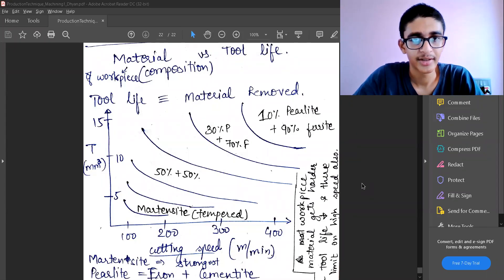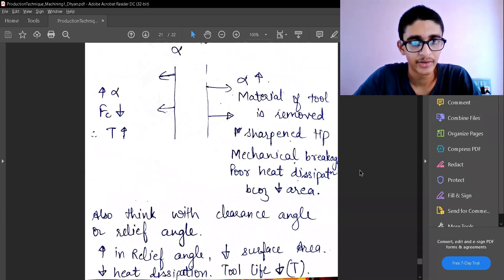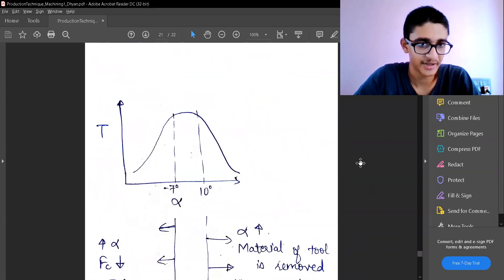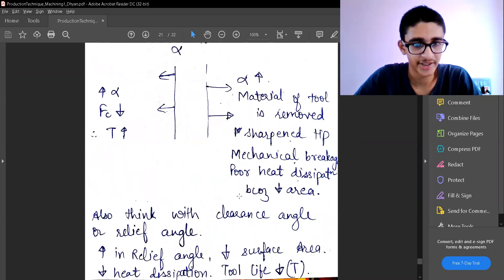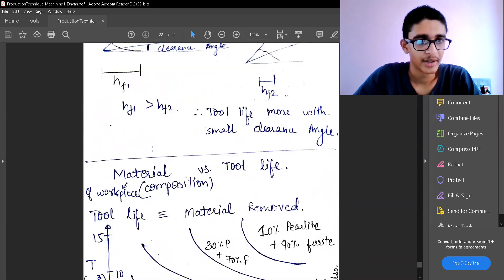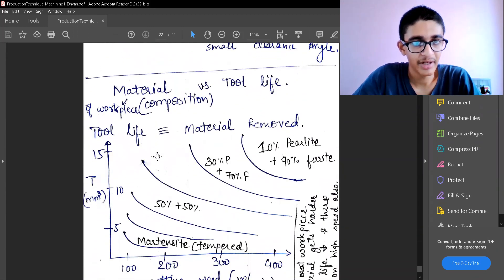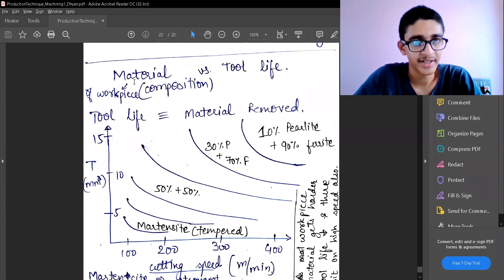Earlier we have seen the tool life was a function of the velocity, feed rate, width of the chip or the machining which is done. It was a function of the rake angle, it was a function of clearance angle or relief angle and flank wear.